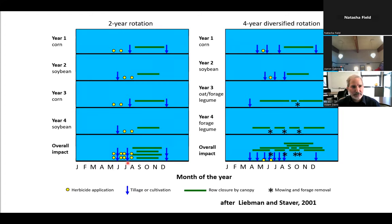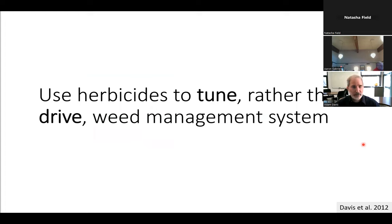When you take a look at the different tactics used in the two-year rotation compared to the four-year diversified rotation, you end up with a much more diverse set of stresses spread throughout the growing season. That's consistent with the message about not just focusing on killing seedlings in April, but spreading your opportunities for weed control throughout the season. Think about herbicides or any other big hammer like cultivation as a way to tune rather than drive your weed management system, and start with a weed suppressive cropping system.